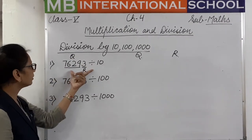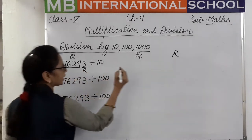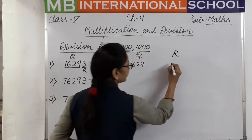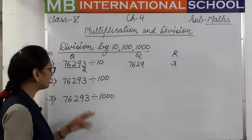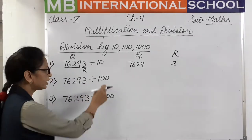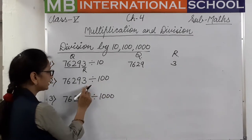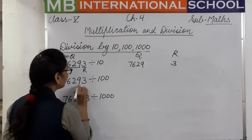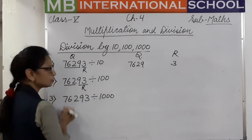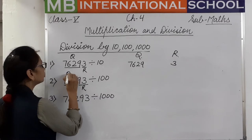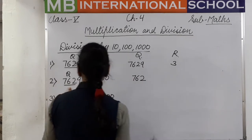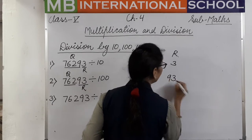So in this number, the quotient is 7629 and the remainder is 3. I hope you are understanding. Now the same number divided by 100 — 100 has two zeros, so we take the last two digits (ones and tens place) as the remainder. The remaining digits become the quotient. So the quotient is 762 and the remainder is 93.